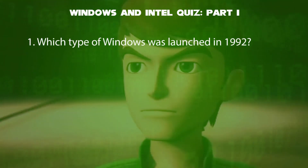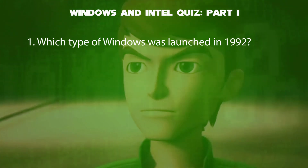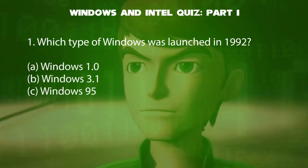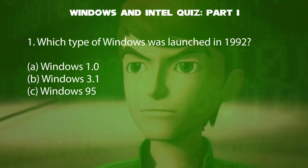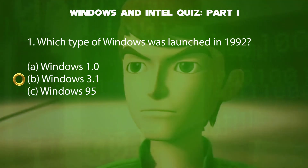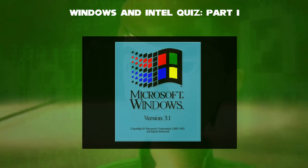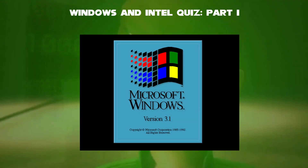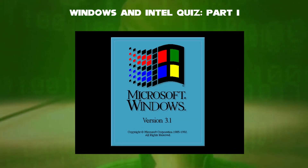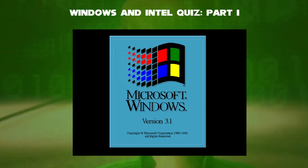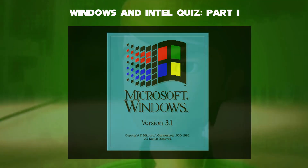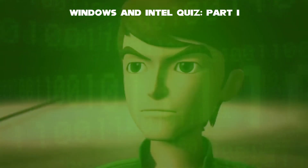First question: which type of Windows was launched in 1992? Is it Windows 1.0, 3.1, or 95? The answer is Windows 3.1. It is a major release of Microsoft Windows in 1992, as a successor to Windows 3.0, and was codenamed Janus.